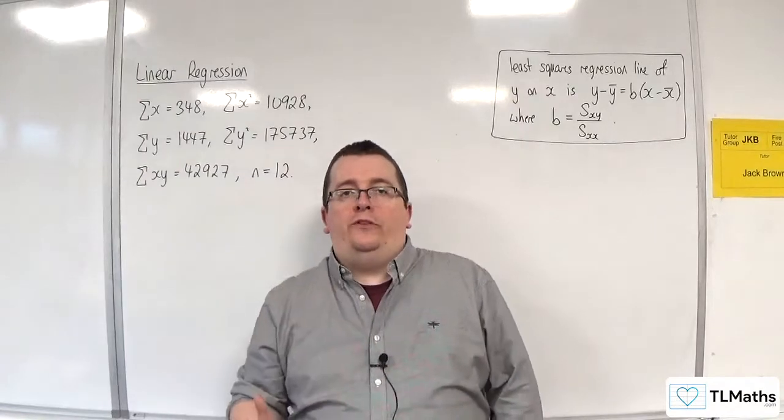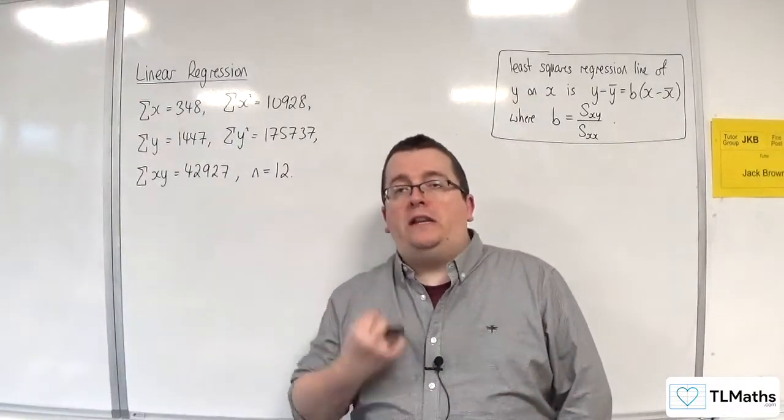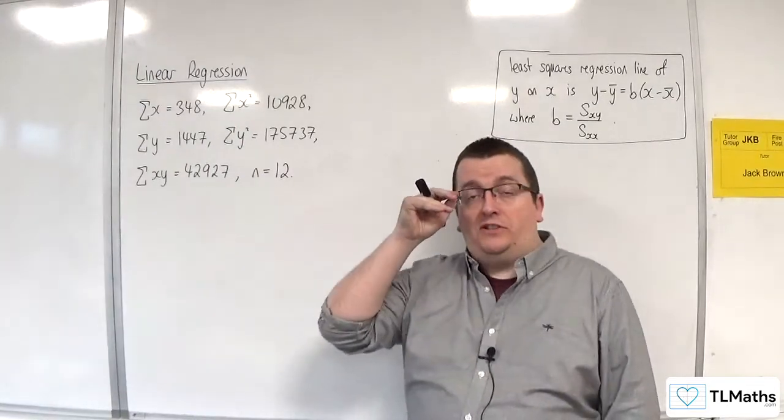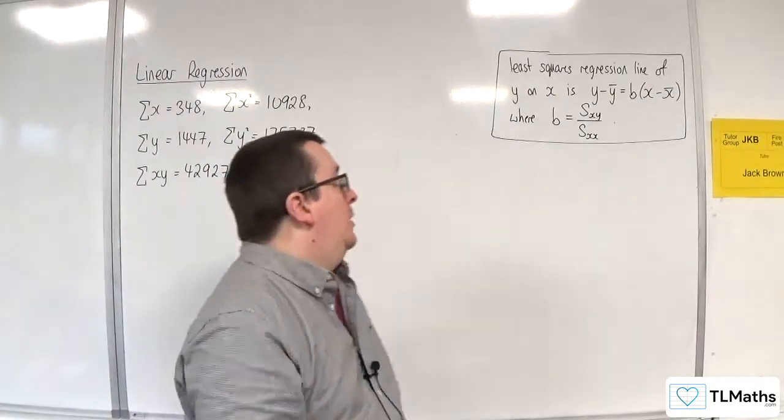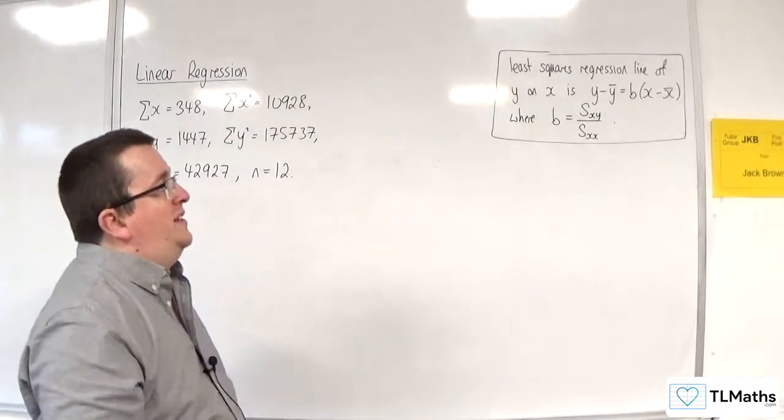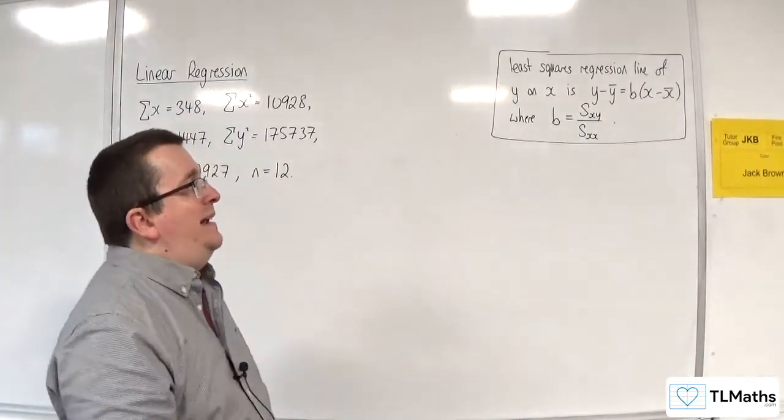So in this video, what I want to do is go through an example of finding the y on x regression line, given these summary statistics. So in the formula booklet, you have that the least squares regression line of y on x is y take away y bar equals b, x take away x bar,